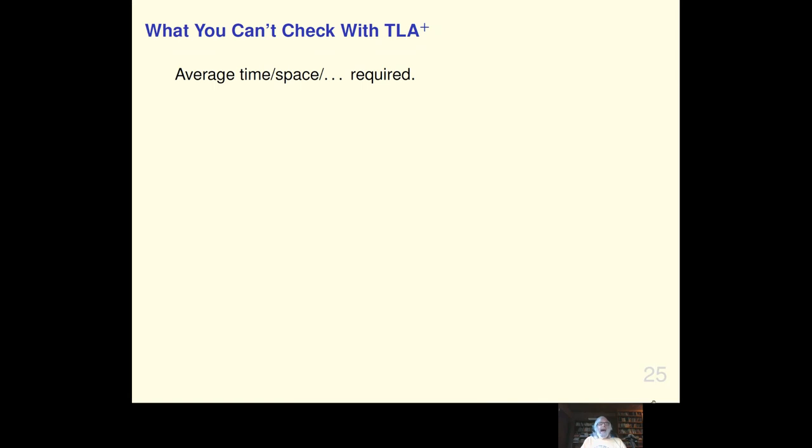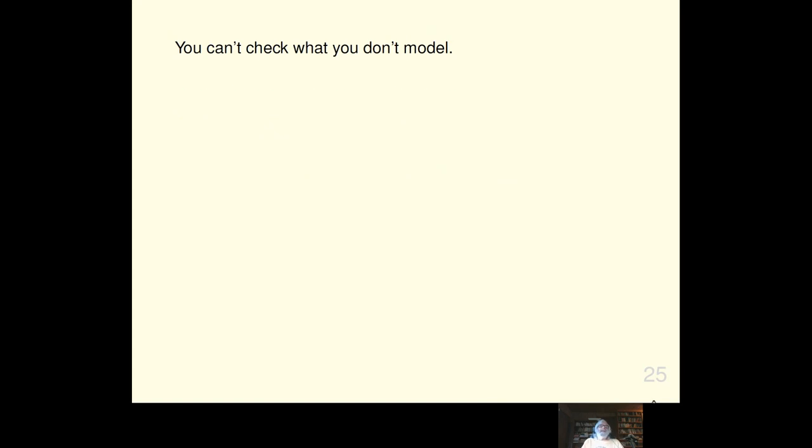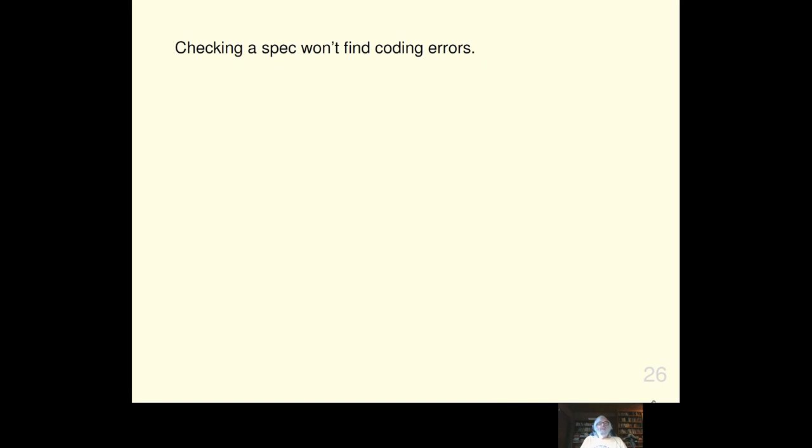Okay, what you can't check with TLA plus, average time, average space required. The probability that something will happen. You can only check properties that are true or false of an individual behavior. And probability and averages are things that are talking about properties of a whole set of behaviors. Well, you can't check them yet. There's work being done on that that I don't have time to talk about. But this is still at the research stage. Stay tuned. Now, you can't check what you don't model. A spec is an abstract model of a system. And it can't prevent errors in parts of the system that it doesn't describe. Also, checking a spec won't find coding errors. And as Marcus has explained, you still have to test the code. But the spec gives you something to test for.